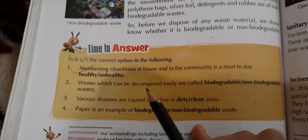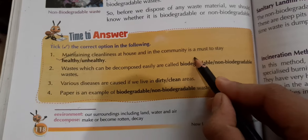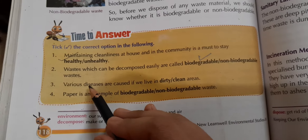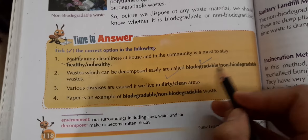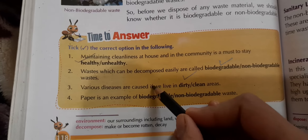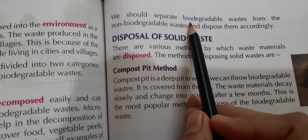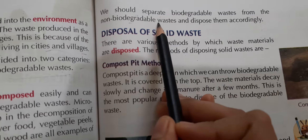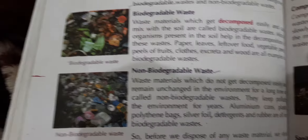Now time to answer: maintaining cleanliness at home and in the community is a must to stay healthy. Waste which can be decomposed easily is called biodegradable. Various diseases are caused if we live in a dirty area. Paper is an example of biodegradable waste because it can decompose with soil. We should separate biodegradable waste from non-biodegradable waste and dispose of them accordingly — similar to how we separate dry waste and wet waste.